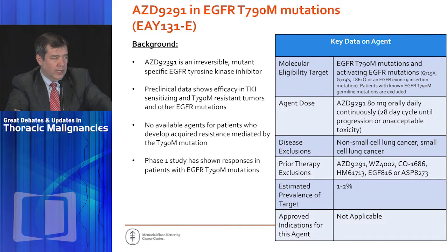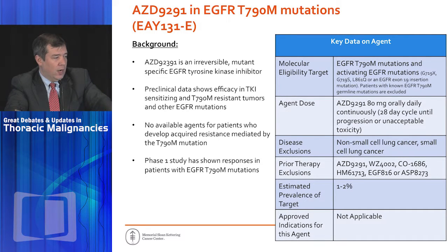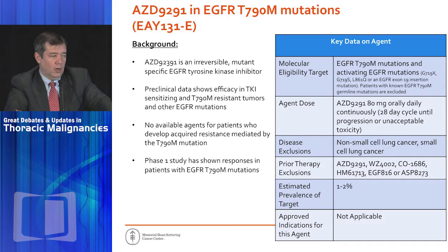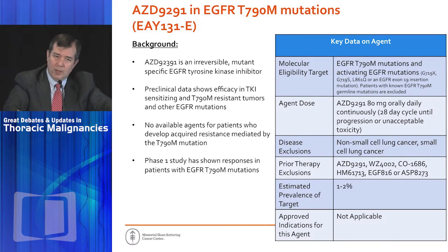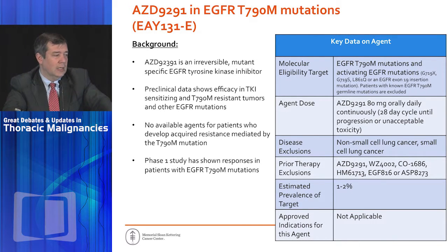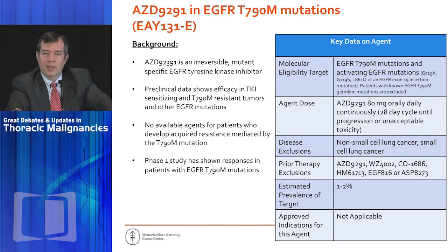One more arm worth mentioning: AZD9291, a third-generation EGFR tyrosine kinase inhibitor. It's a fabulous drug for patients with acquired resistance to erlotinib or gefitinib — specifically those with T790M. This arm looks for patients with T790M who don't have lung cancer, to find out how many patients with other diseases can enroll.